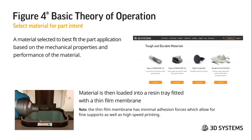When you select a material for the part, the material chosen has to best fit the part application based on the mechanical properties and performance of that material. There are several materials to choose from — for example, Figure 4 Tough Gray 15 and Tough Gray 10 are two materials with specific properties to best fit your intended application. The material is then loaded into the resin tray fitted with a thin film membrane; it is a hand pour inside the standalone, and the MDM is an automatic feed system on the modular system.